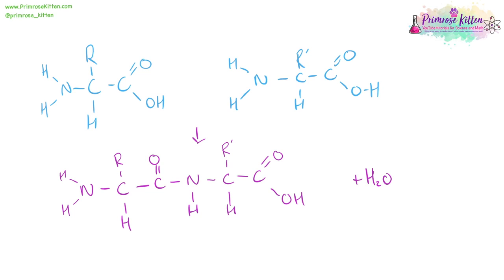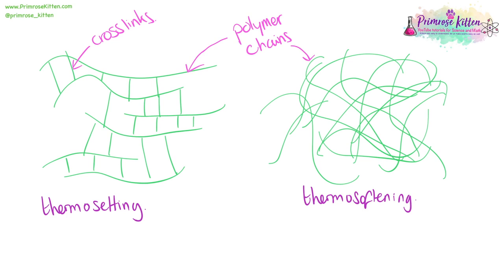For condensation polymerization, you can see we had two different functional groups here. The opposite ends of amino acids, which I've drawn here, and we have lost water as a small molecule. Condensation polymerization is when we lose a small molecule from the reaction, and it is usually water, but not always.